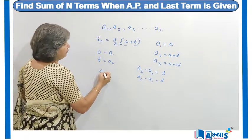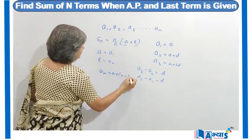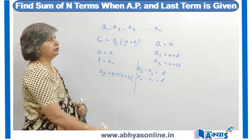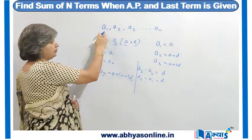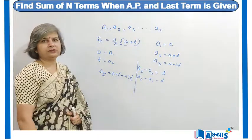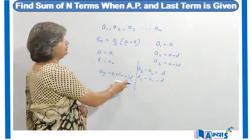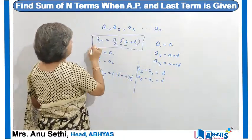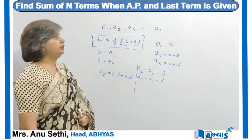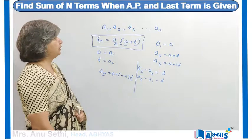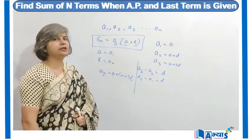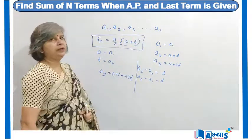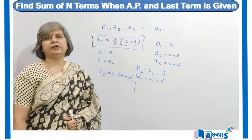Using this value of D, we can find the value of n, because we know that An = A + (n−1) × D. We know the value of A, we know the value of D, and we know the value of An because An has been given to us. A is the first term and D is the common difference we just found. Using these three values, we can find n, and once we know n, we can use the formula to find the sum of n terms of the AP.